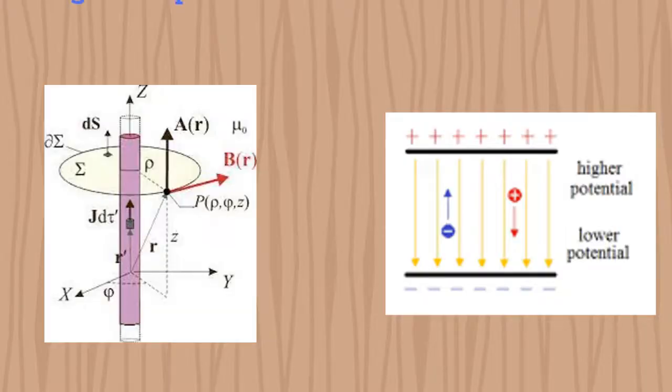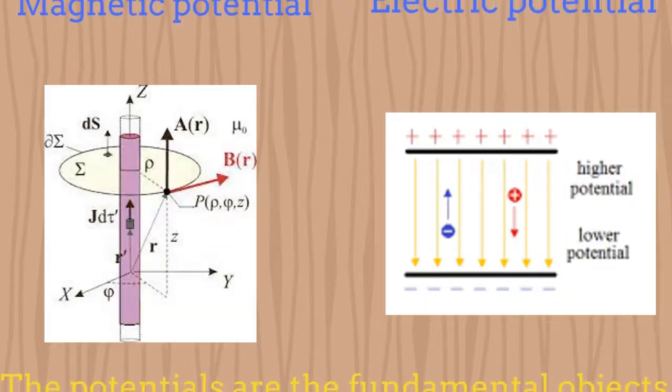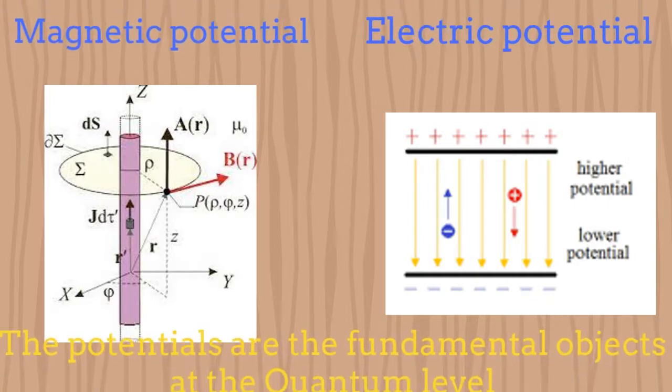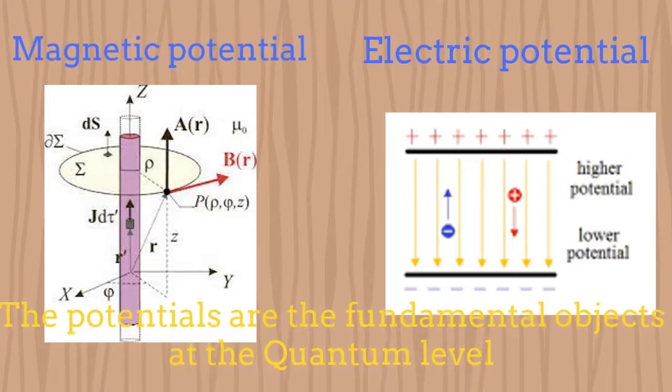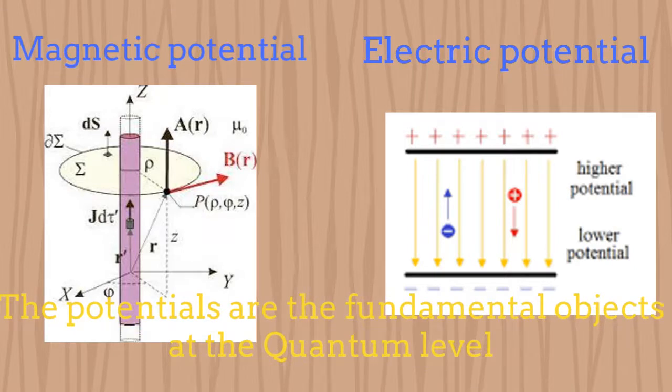If we go now from classical electrodynamics to quantum electrodynamics, at the quantum level it has been demonstrated that the fundamental objects describing the dynamic of the particles inside the electromagnetic interaction are the potential fields, namely the vector potential which is related to the magnetic field and the scalar potential which is connected to the electric field. Both fields are just components of the same quadri-vector from the perspective of electrodynamics and from the perspective of special relativity.